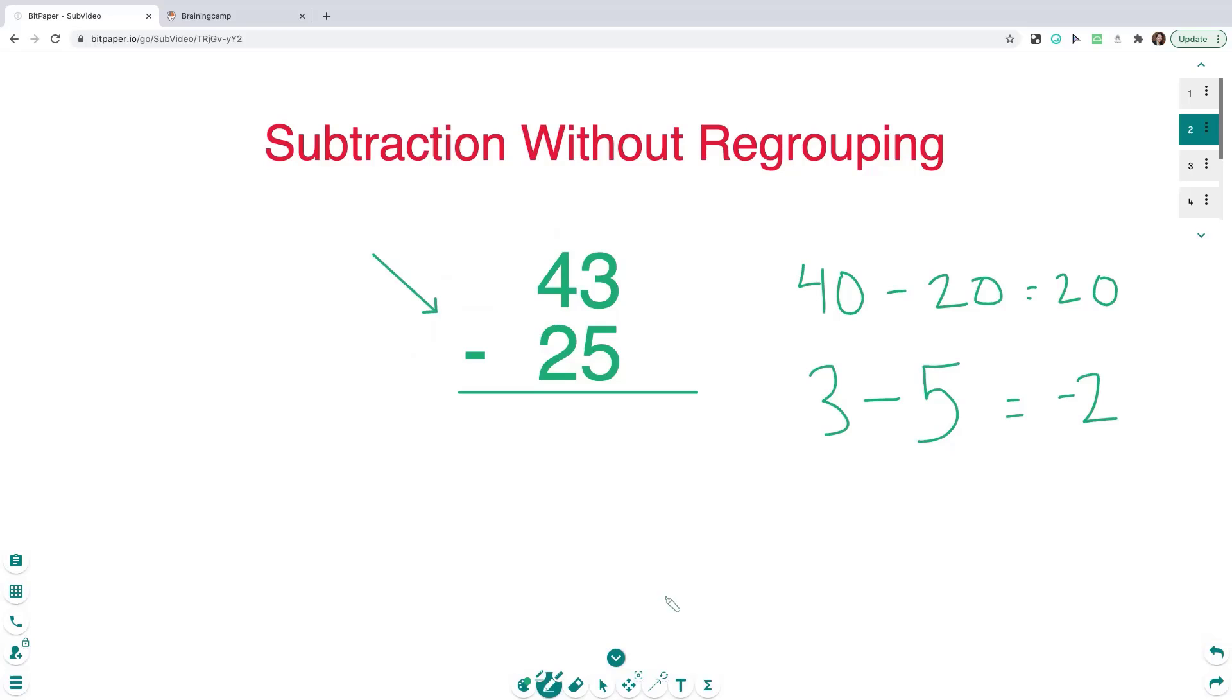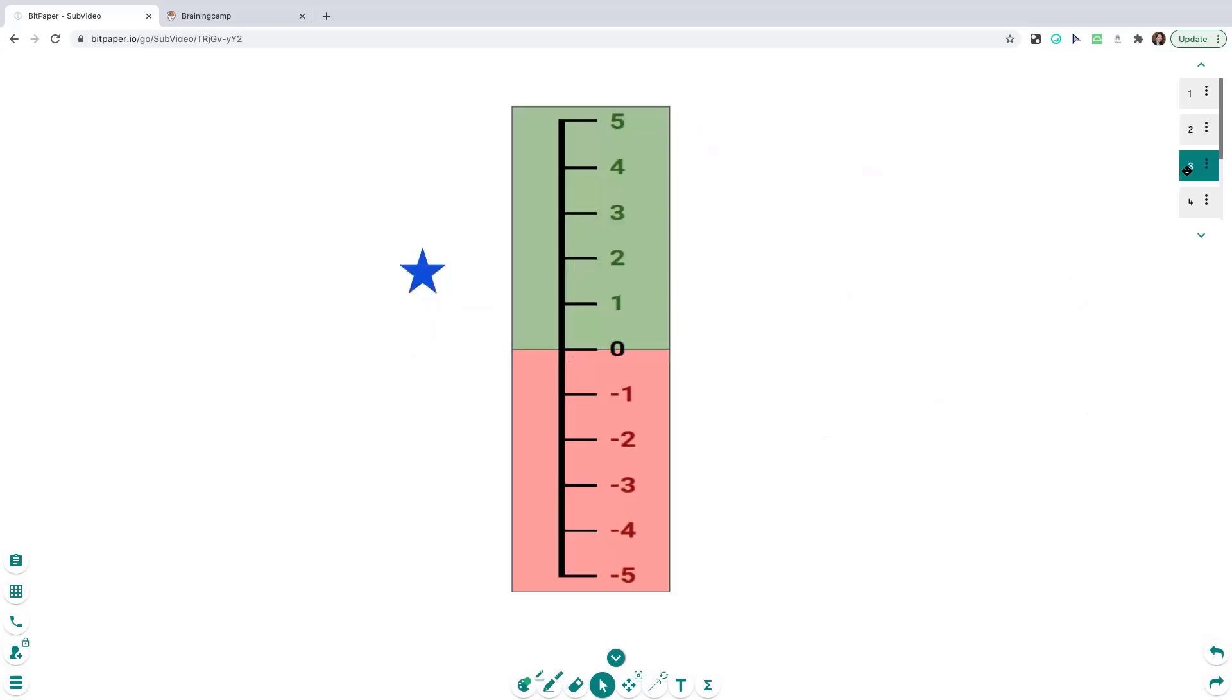And you can model this a couple different ways. One way is you can model this with a vertical number line. So if I am starting at positive 3, I want to move down the number line 5 spots. So I'm going to go down 1, 2, 3, and now I'm going to go into the negative numbers, 4, 5 as I move downwards with this vertical number line, and I get to negative 2. You can see on this vertical number line that 3 minus 5 is negative 2.